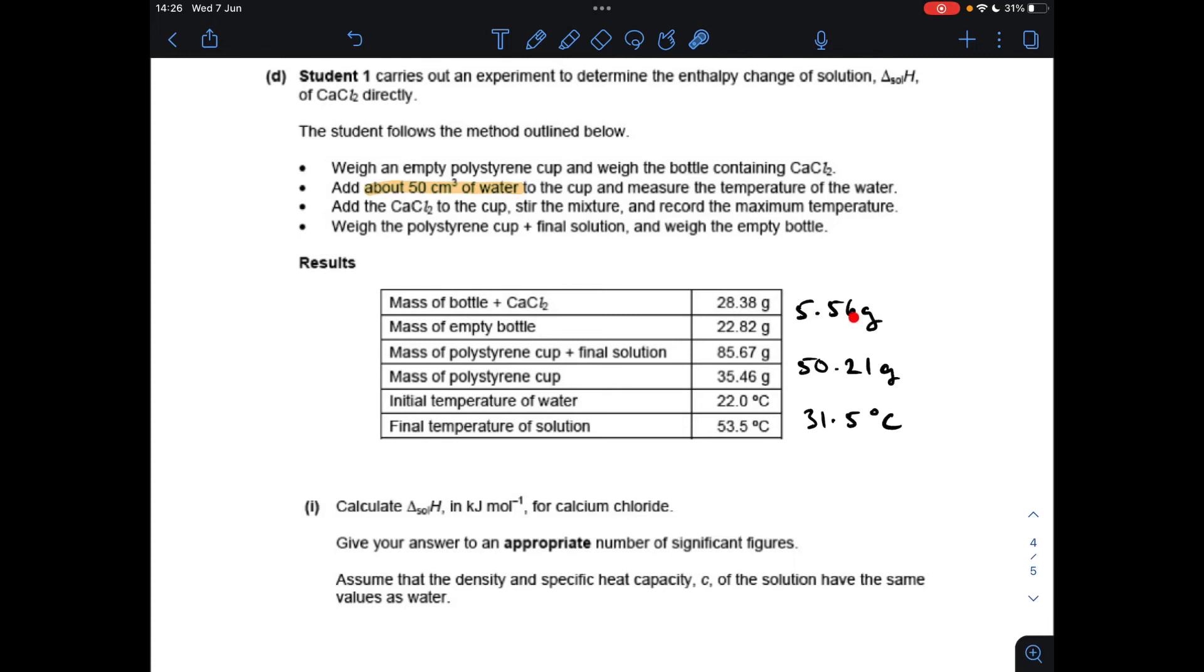So I'm getting 5.56 grams of calcium chloride. Obviously the difference between those two, the solution mass difference between those two, 50.21 grams. You'll notice I've highlighted here it says in bullet point two add about 50 cm³ of water - that's the exact mass of the solution, so that's the mass that needs to go into our mcΔt equation. I imagine some students will have put that when this paper was actually set.